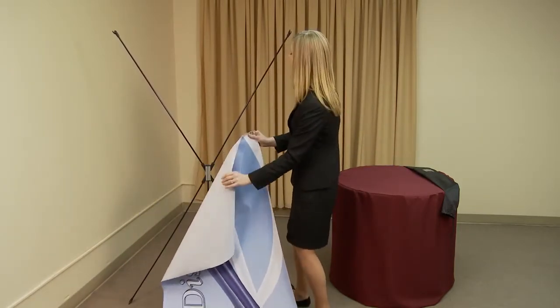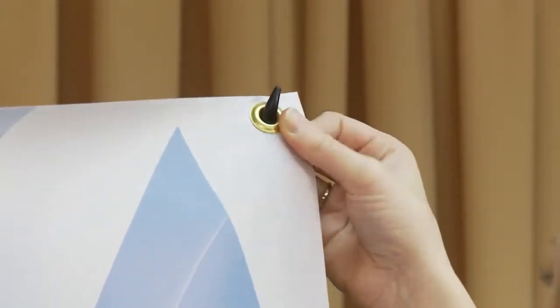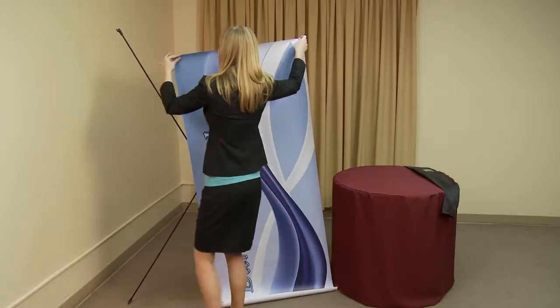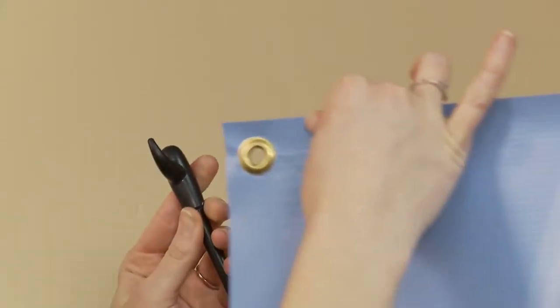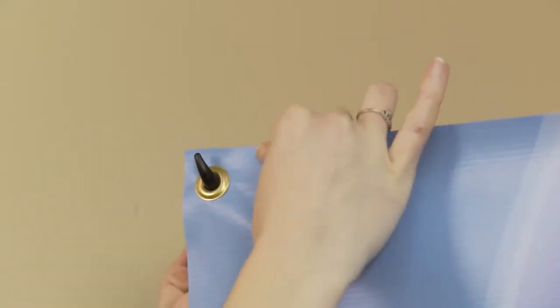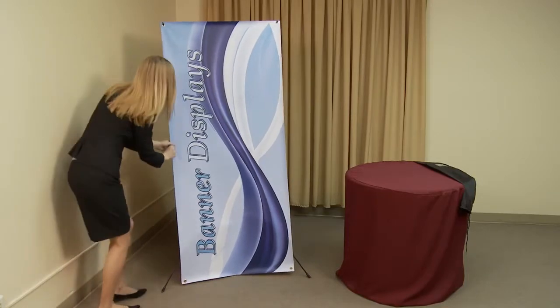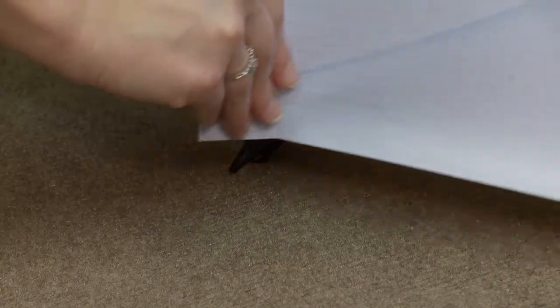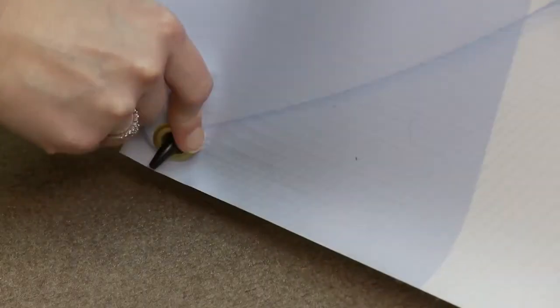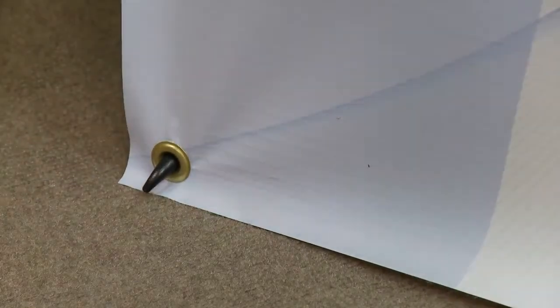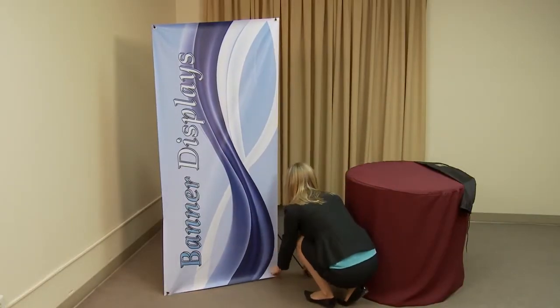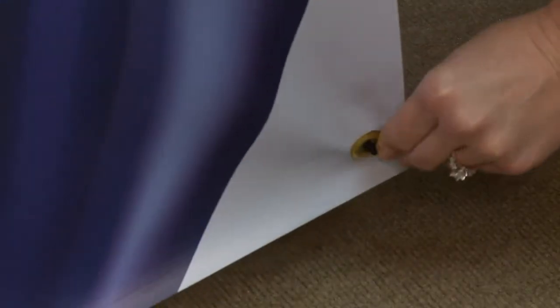Attach the graphic by first hooking the upper arm hooks into the upper grommets of your graphic. Next, hook the lower arm hooks into the lower grommets on the graphic. You will need to bend the arms, and the arms will remain bent to add tension to the graphic.